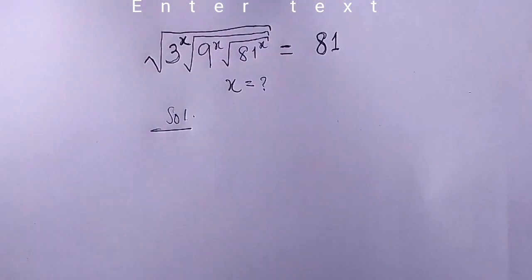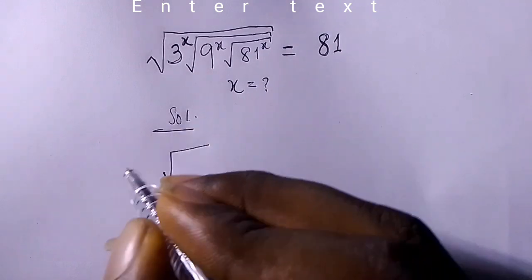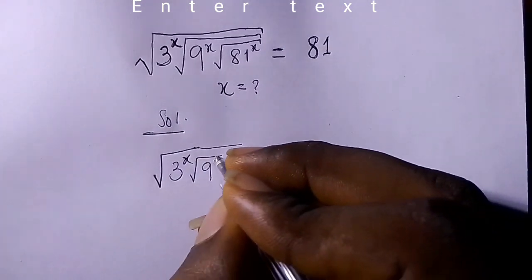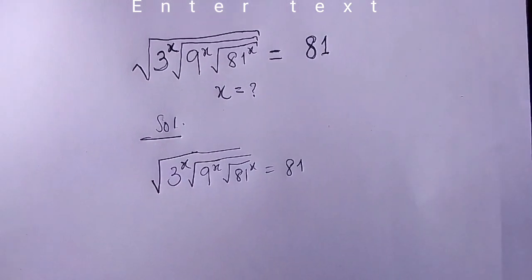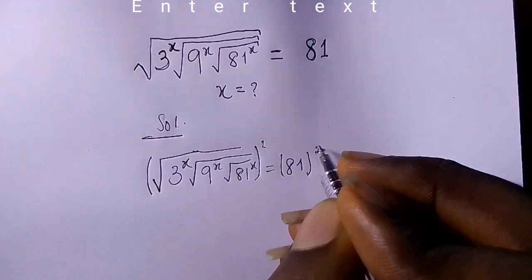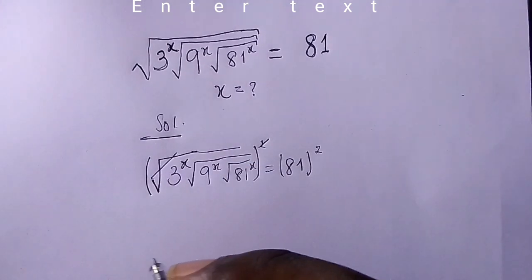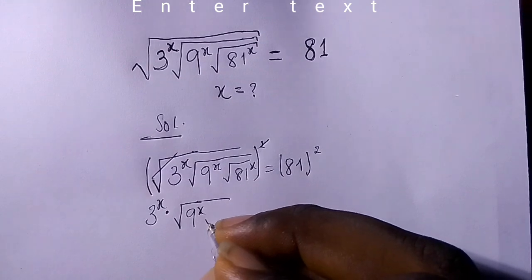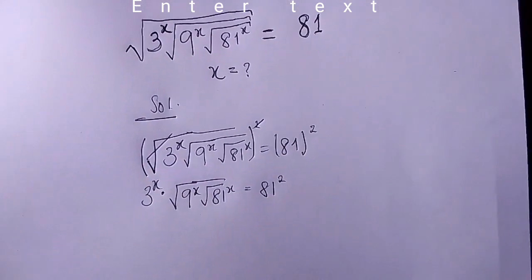We have two steps in solving this question. The first step is squaring both sides to get rid of all the square roots. So: root 3 raised to the power of x, times root 9 raised to the power of x, times root 81 raised to the power of x equals 81. Squaring both sides — square cancels square root — and we get 3 raised to the power of x, times root 9 raised to the power of x, times root 81 raised to the power of x, equals 81 squared.